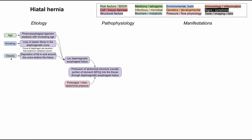Obesity is another risk factor. When you have too much fat, you end up depositing fat in and around the crura, and that widens the hiatus. So the crura play two roles here — they can either be damaged when you smoke, or have fat deposited around them and become widened in obesity. Lastly, there's some component of genetic predisposition that also predisposes you to having a weak hiatus, though that's not super well understood.